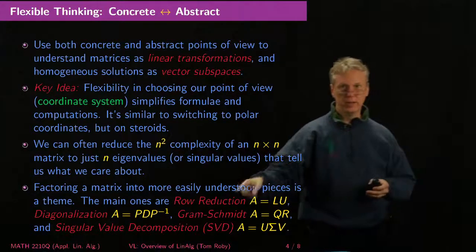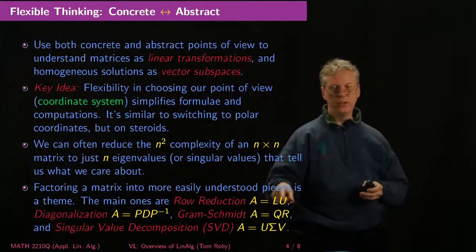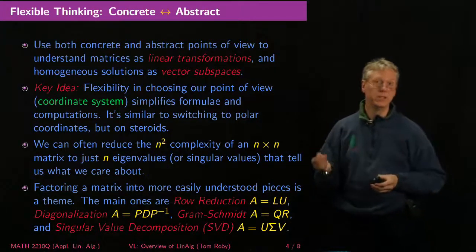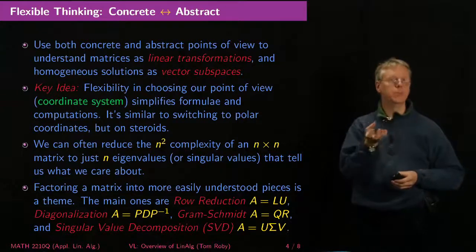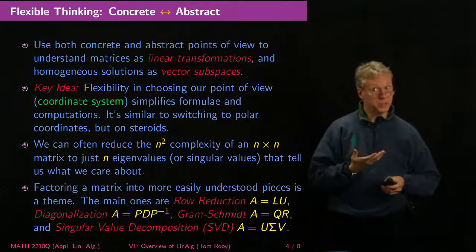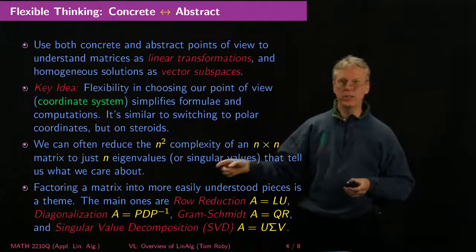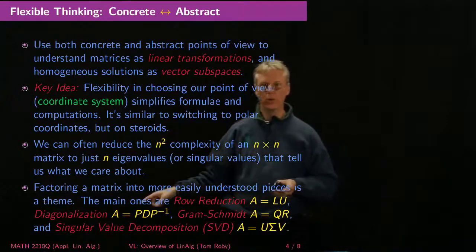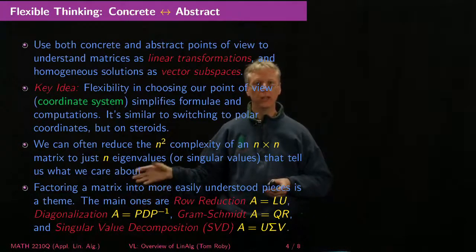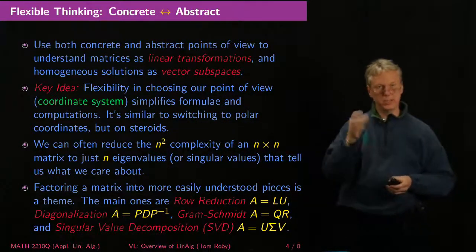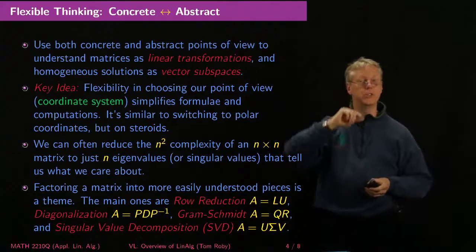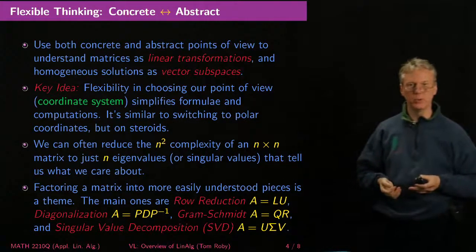So row reduction that I mentioned here is the same thing as an LU decomposition. It's a way of splitting up a matrix as a lower triangular one and an upper triangular one, which makes it easy to say solve a corresponding system of linear equations. Diagonalization is a way of changing coordinates in such a way that you get a diagonal action of a matrix, which is very easy to understand because it just stretches certain directions proportionately, but keeps them pointing in the same direction.